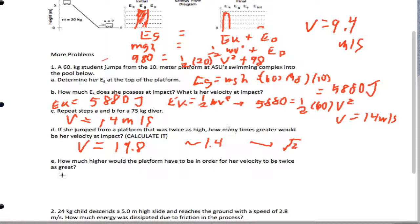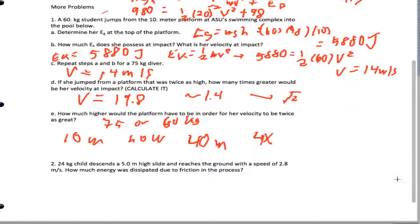And how much higher would the platform have to be in order for her velocity to be twice as great? Doesn't matter for you, 75 or 60, it'll work. But I will tell you this, the answer should be it's 10 meters before, now 40 meters. So you need it to be four times as great.